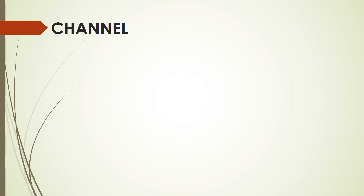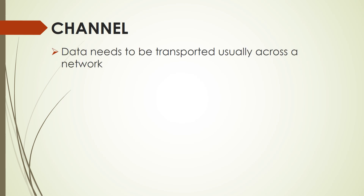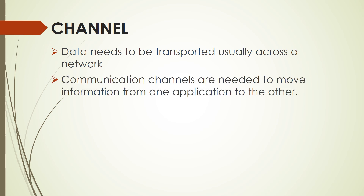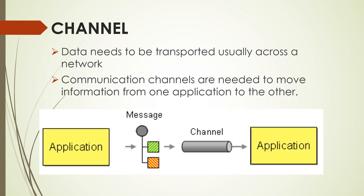Let's talk about channels. Data needs to be transported, usually across a network. Communication channels are needed to move information from one application to another. These channels could be a series of TCP/IP connections, a shared file, or even a shared database. A channel is a logical address that both sender and receiver can agree on without being aware of each other's identity. The sending application selects a particular channel knowing that the receiver will be looking for that sort of data on that channel. In the image, you see two applications — a receiver and a sender — with a channel wherein the message flows.